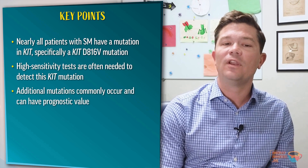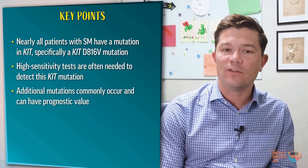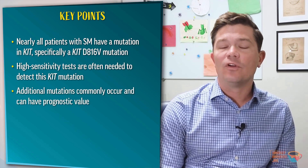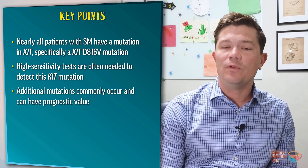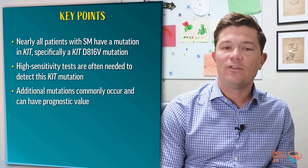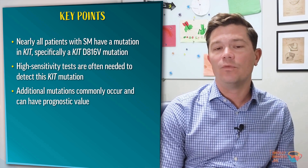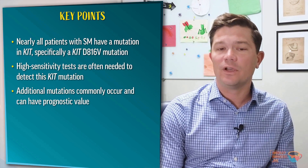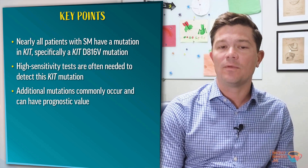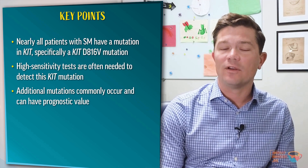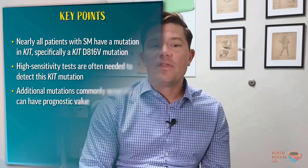Additionally, common myeloid mutations such as TET2, SRSF2, ASXL1, and RUNX1 commonly occur in systemic mastocytosis and have prognostic value.